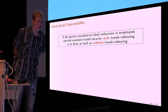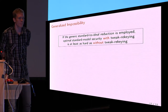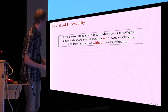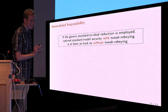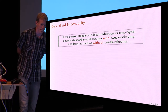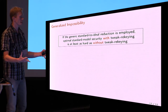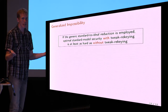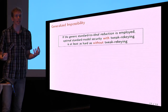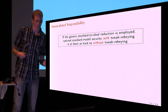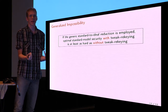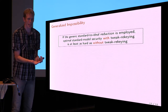We proved a somewhat surprising result: if we use this generic standard-to-ideal reduction that everyone uses, then achieving optimal security in the standard model for a scheme that does tweak rekeying is at least as hard as achieving it for a scheme that does not do tweak rekeying. Stated differently, assuming this reduction is necessary and that cascaded LLW only achieves security 2^(sigma·n / (sigma+1)) at best, it is impossible to achieve optimal security with rekeying.